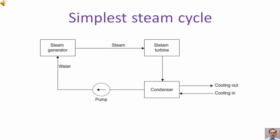This diagram shows the simplest steam cycle. Steam is generated in the steam generator and goes to the steam turbine, where the energy in the steam is converted into mechanical energy. The exhaust steam comes out from the turbine, and in the condenser it is converted into water with the help of circulating water. The remaining heat energy in the steam goes to the atmosphere in the form of circulating water.